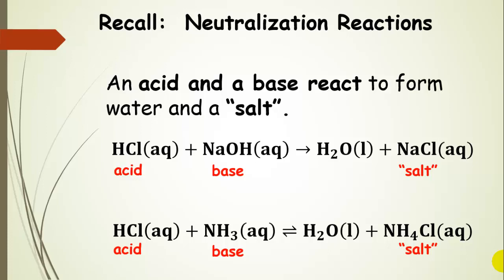Let's remind ourselves of neutralization reactions, because this is how you get these salts. We react an acid and a base, and we get water and a salt. Here's hydrochloric acid reacting with sodium hydroxide to give water and sodium chloride. Now let's react hydrochloric acid with ammonia — a weak base — and we still get water and a salt: ammonium chloride. What's interesting is that sodium chloride does not affect the pH, so it doesn't hydrolyze, but ammonium chloride does. We're going to look at why that is.